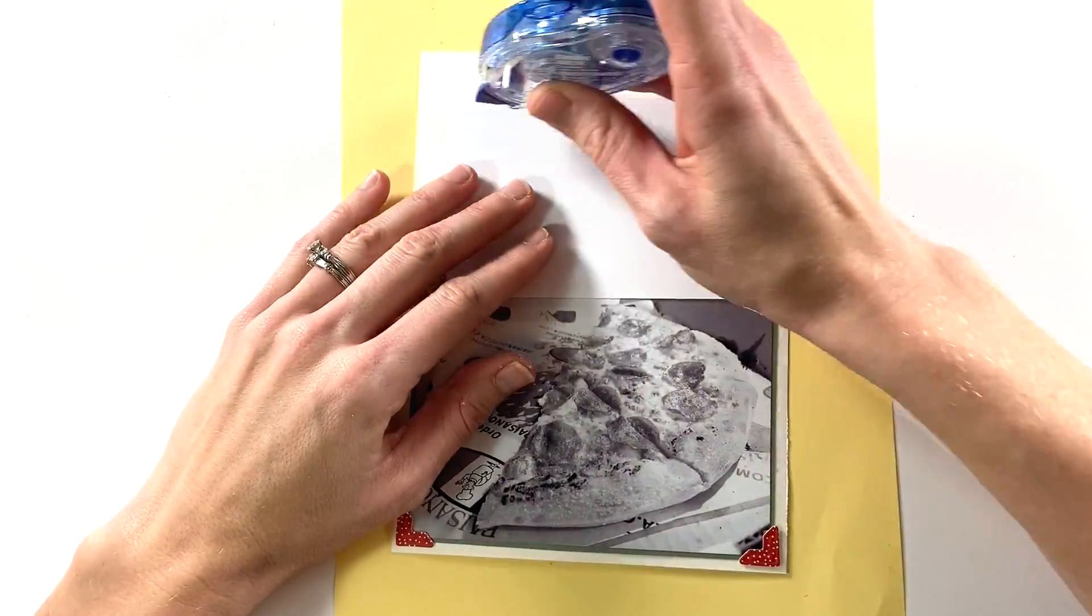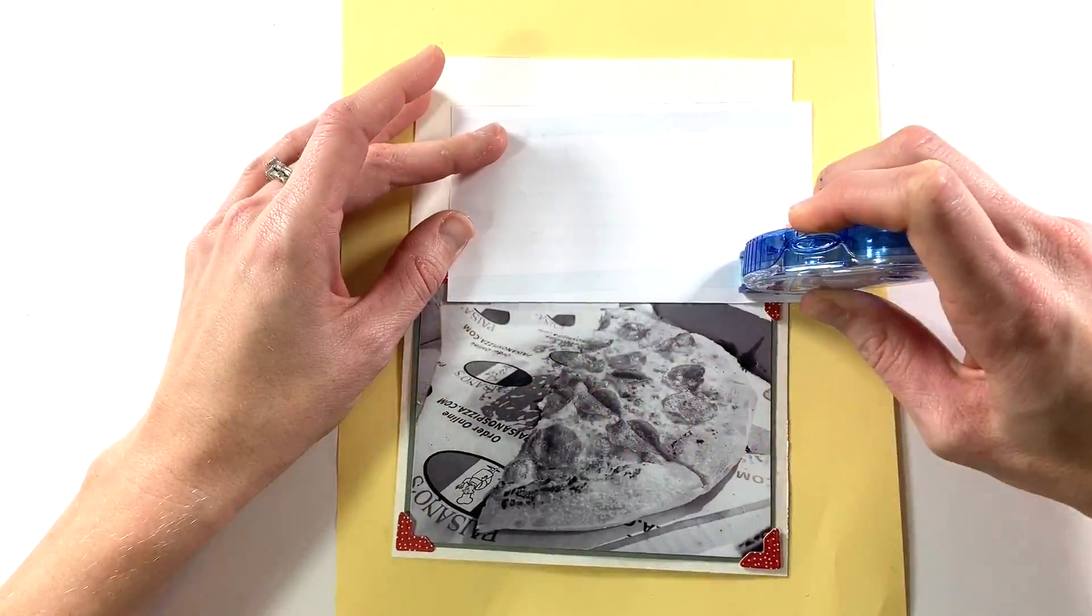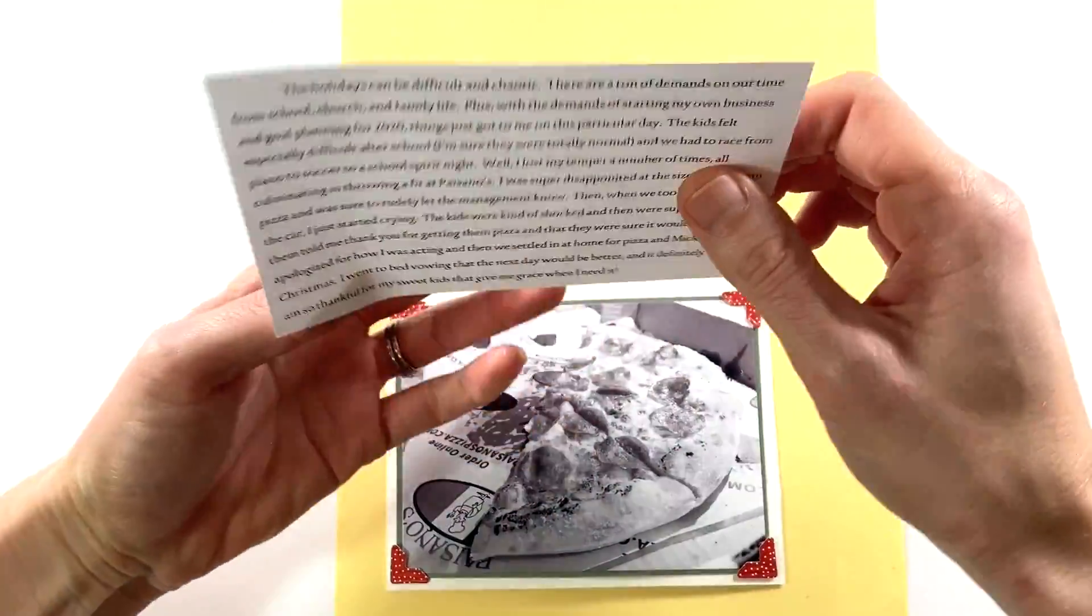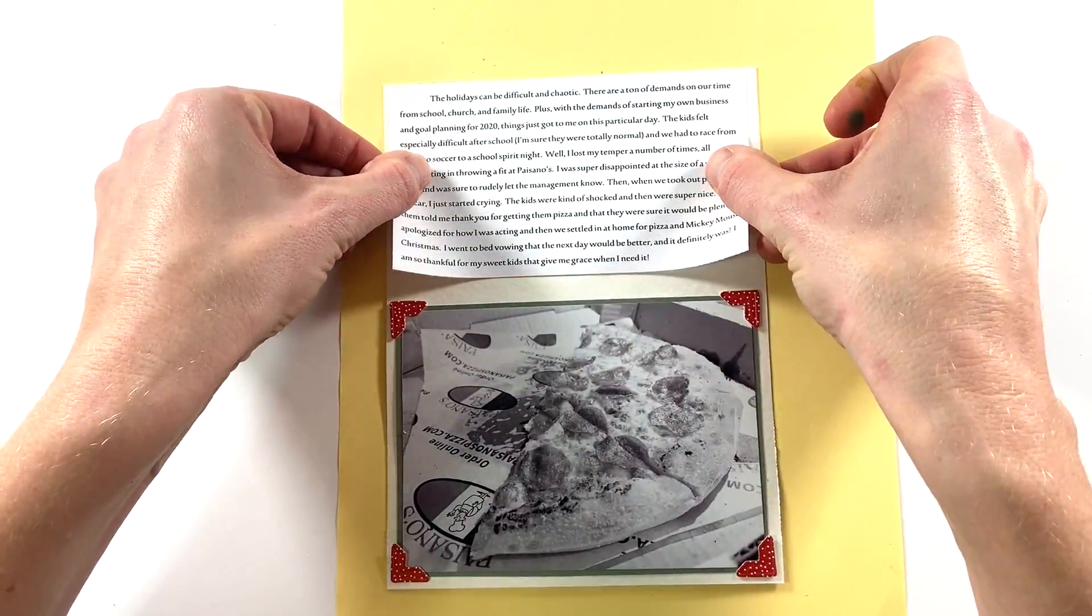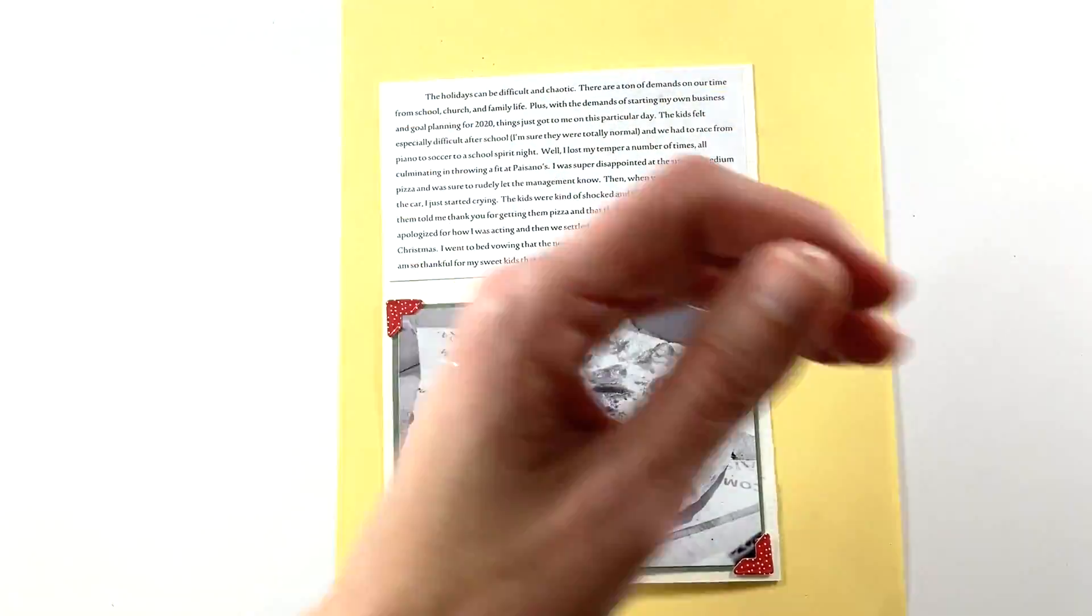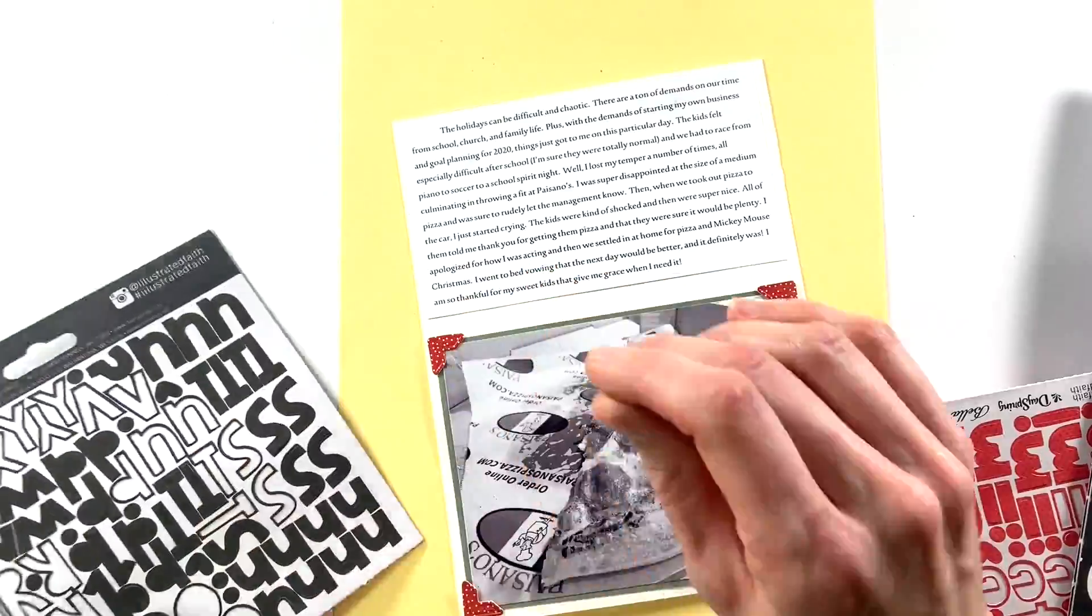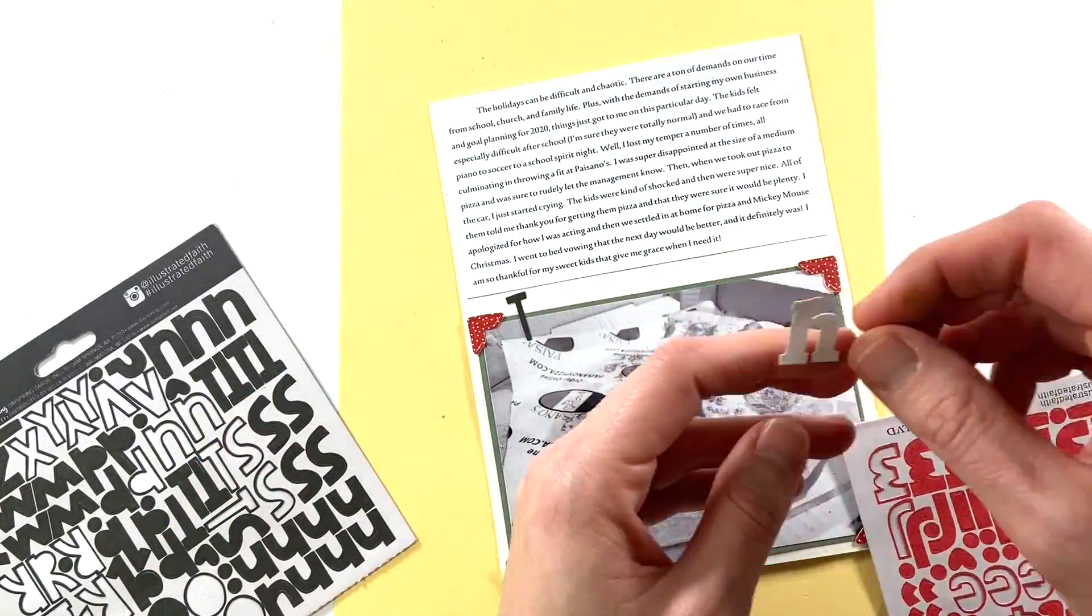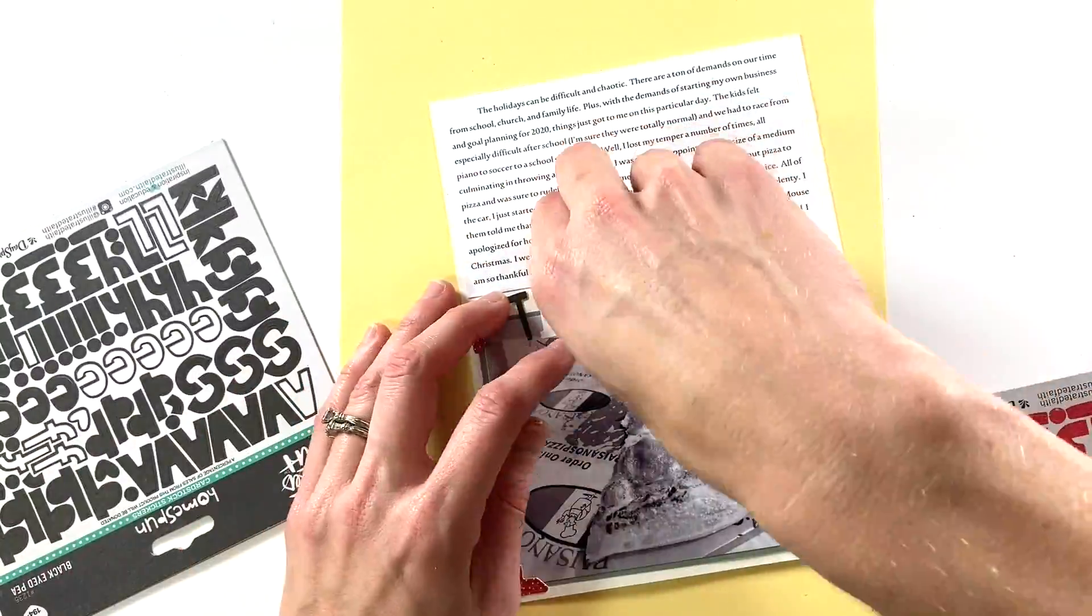You can see in this case I had a lot to say about the story for that day so I did go ahead and type it out. Normally I don't mind writing it out but I knew I wouldn't be able to fit it with just my handwriting so I'm adhering that at the top and then I'm going to come in with those same alpha stickers that I used on the front just to bring those two together and I'm going to add the title of the story.